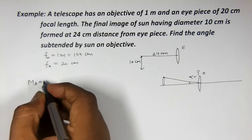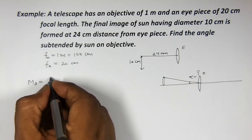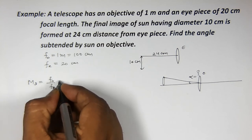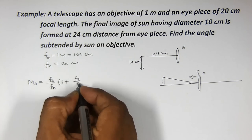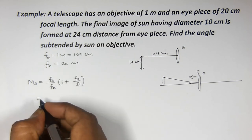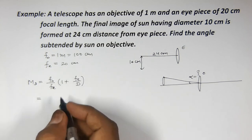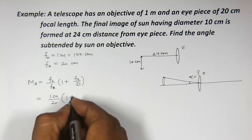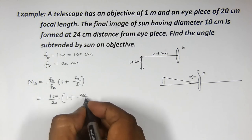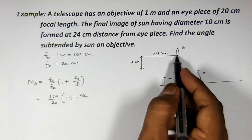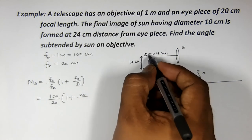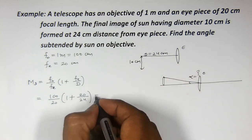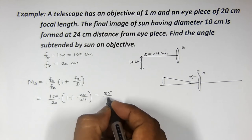Jaise agar hum magnification calculate karein — Md jisko hum kehte hain — to wo hota hai, bina minus ke likhein to: fo upon fe into (1 plus fe by d). fo ki value hai 100 cm: 100 upon 20 into (1 plus 20 upon 24), jahan d = 24. Isko solve karein to value aayegi 55 upon 6.